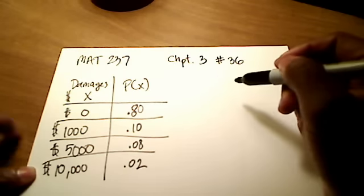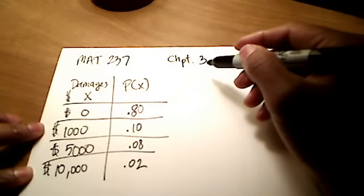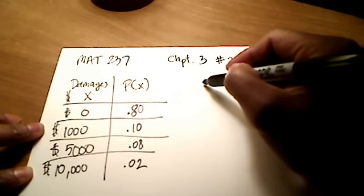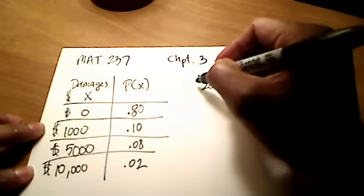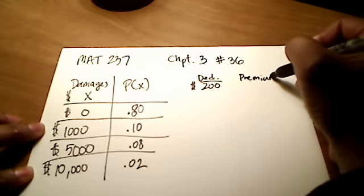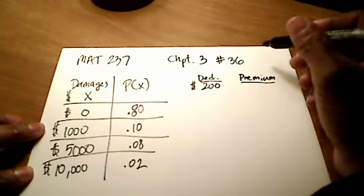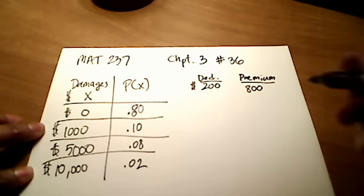So it also has several different policies. According to WebAssign, they have variations here. Let's say that we have a $200 deductible. These are deductibles. $200 deductible, and the premium for that, that's how much money you'll pay out per year, was, I think, the book uses, or WebAssign does, $800 premium.